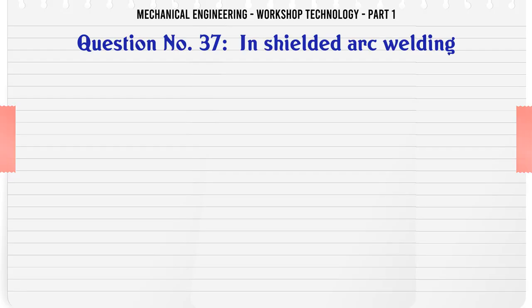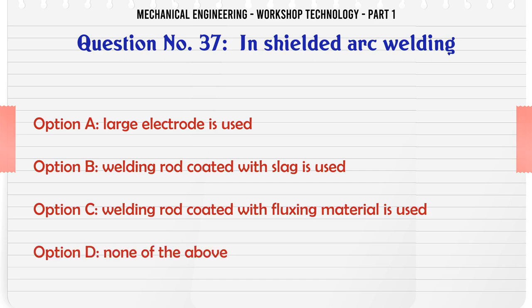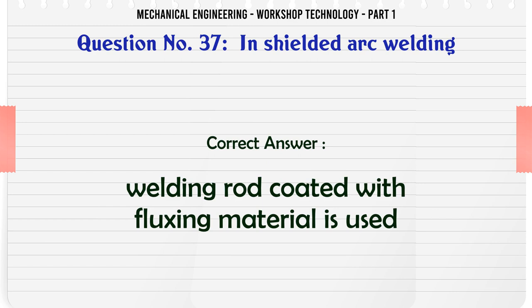In shielded arc welding: A. Large electrode is used. B. Welding rod coated with slag is used. C. Welding rod coated with fluxing material is used. D. None of the above. The correct answer is: Welding rod coated with fluxing material is used.